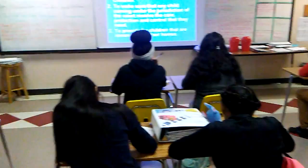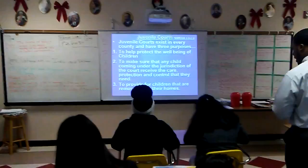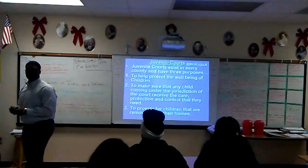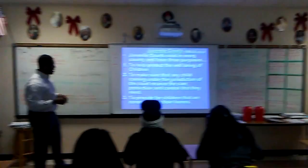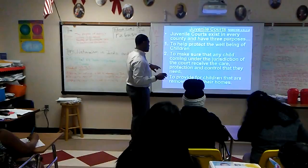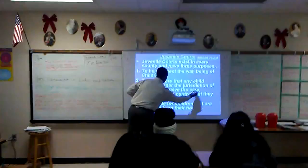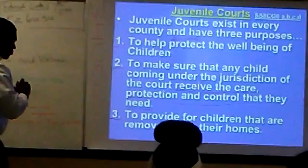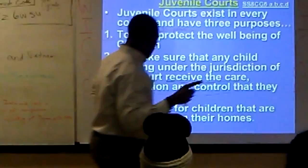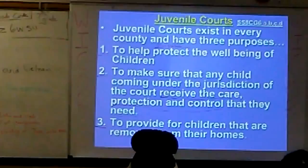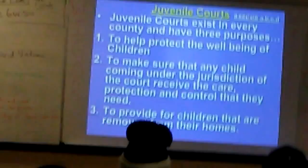So we see that the juvenile justice system is not just about penalizing kids, but they want to make sure that you are in the correct environment in order for you to grow positively. The three purposes: one, to protect the well-being of a child; two, to make sure these children are receiving the care, protection, and control they need; and three, to provide for children that are removed from their homes.